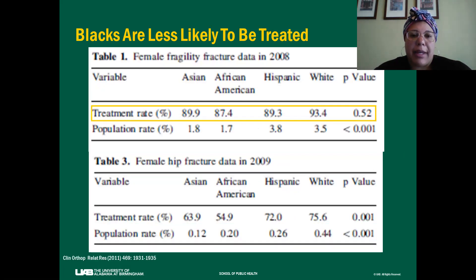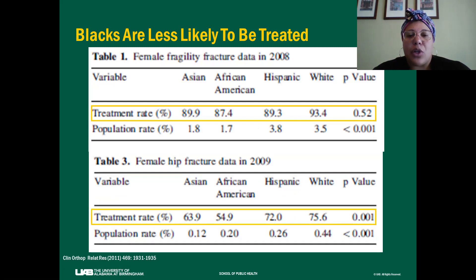With respect to treatment, a study in the Kaiser Northern California population showed that within all fragility fracture patients there was no disparity in treatment rate by race and ethnicity, but when they looked exclusively at hip fracture, they did see racial and ethnic differences, with lower proportions of treatment observed in Black and Asian populations and higher proportions in White and Hispanic populations.